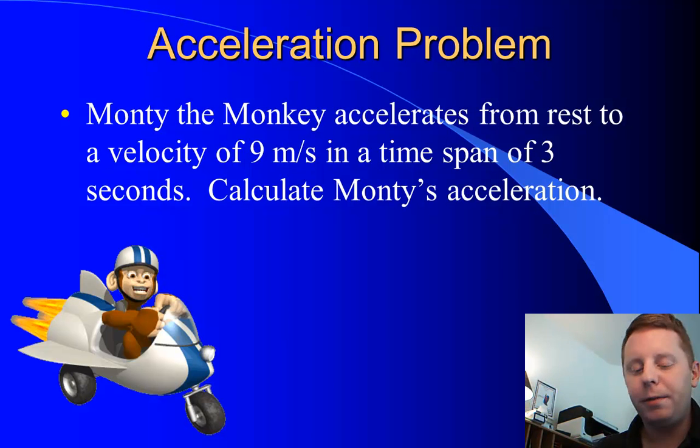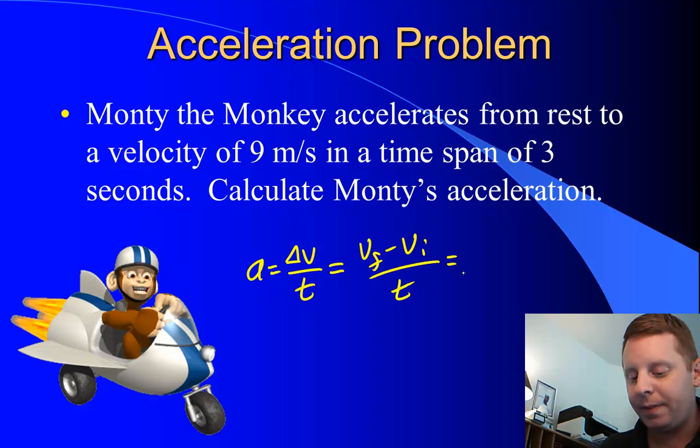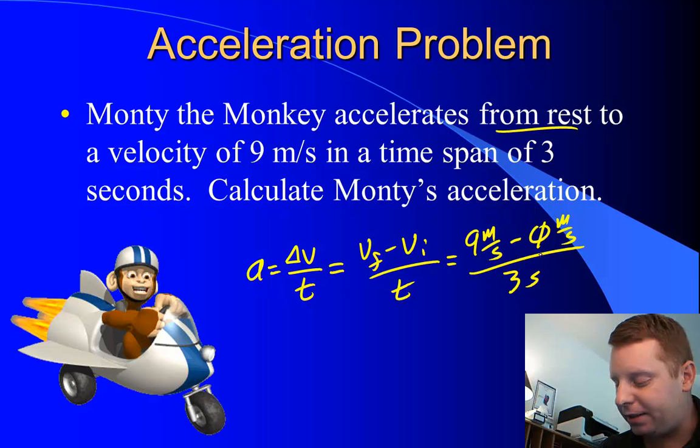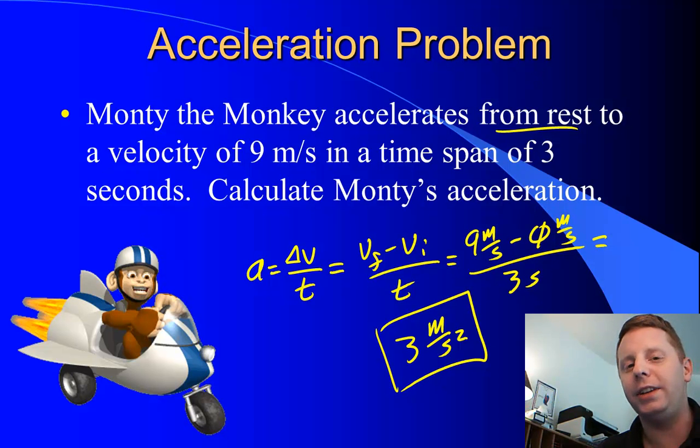If we look at a problem, Monty the monkey accelerates from rest to a velocity of 9 meters per second in a time of 3 seconds. Calculate Monty's acceleration. Well, we'll start with our formula. Acceleration is change in velocity delta V divided by T. And if you recall, change in anything is always its final value minus its initial value. So that's going to be V final minus V initial divided by the time. His final velocity was 9 meters per second. He accelerates from rest. That means he started at 0 meters per second in a time of 3 seconds. 9 minus 0 is 9 divided by 3 is 3. So 3 meters per second squared. Acceleration is a vector. We don't have a direction here, but we can assume based on what the problem is showing us that the direction must be forward in this case.